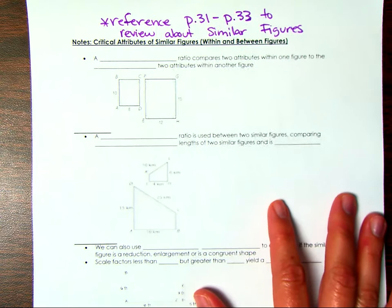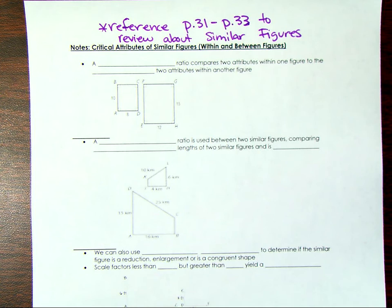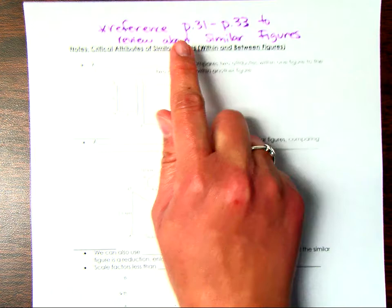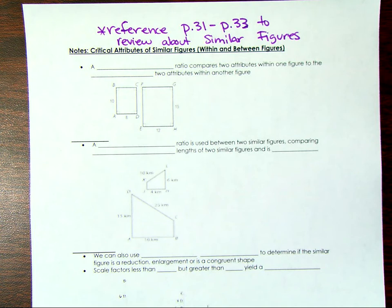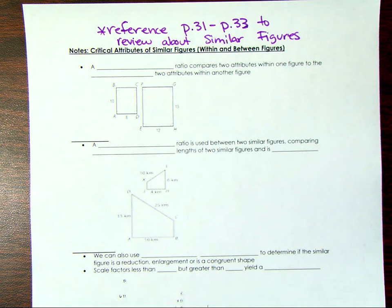Today we are going to look at what we call critical attributes of similar figures. We have talked about similar figures in the past. In your interactive notebook, pages 31, 32, and 33 are all about similar figures. Remember, similar figures have corresponding sides that are proportional and corresponding angles that are congruent. Those figures also have to be the same type of shape and positioned in the same way. We'll review that as we go through today.